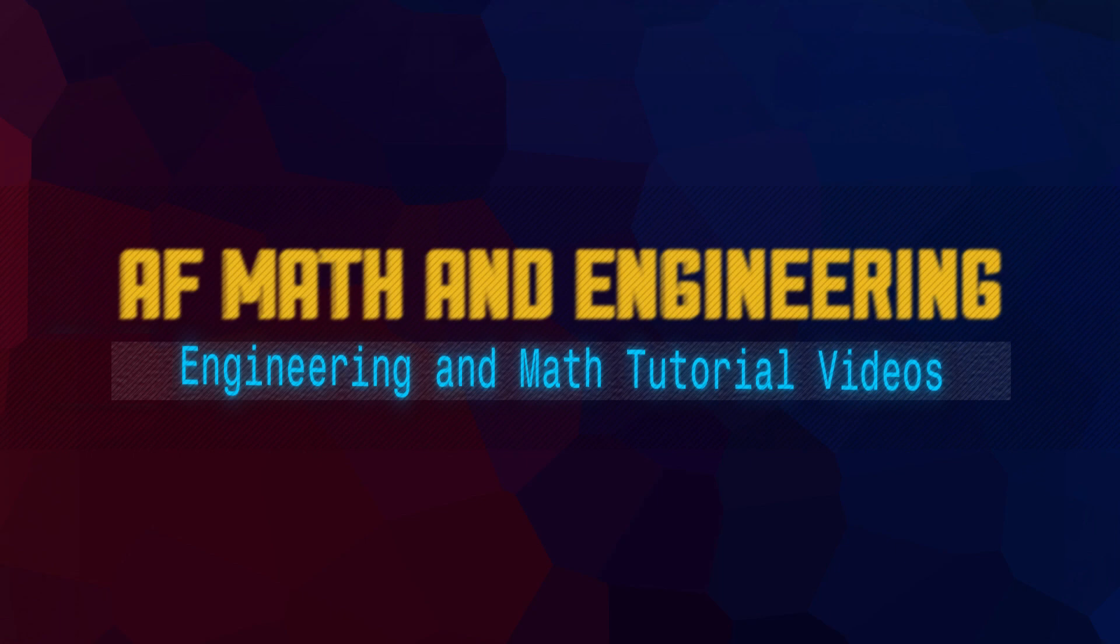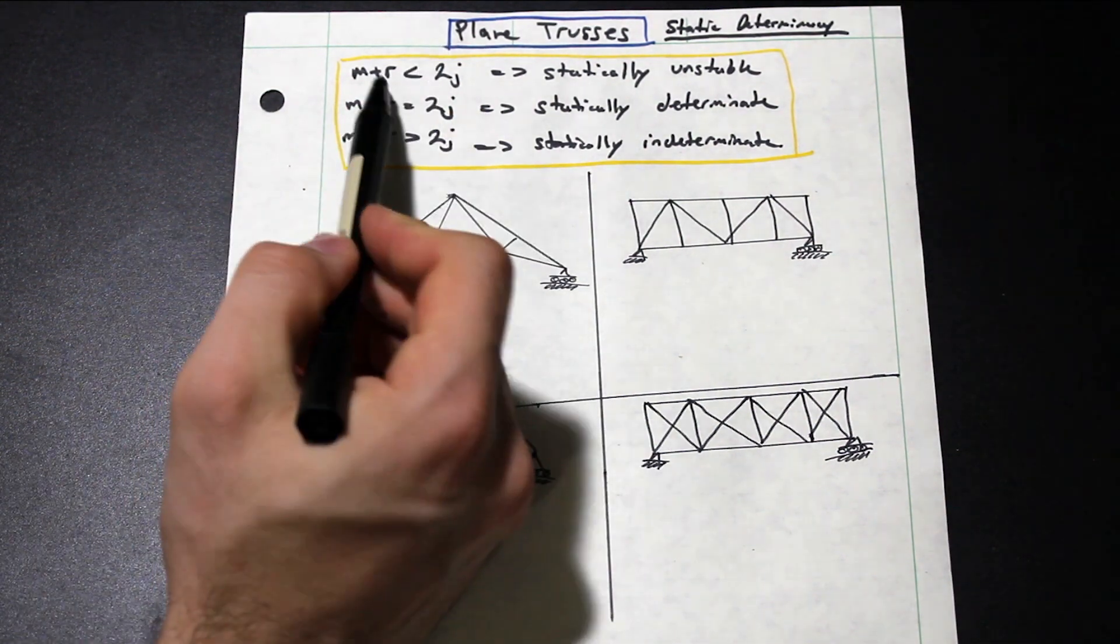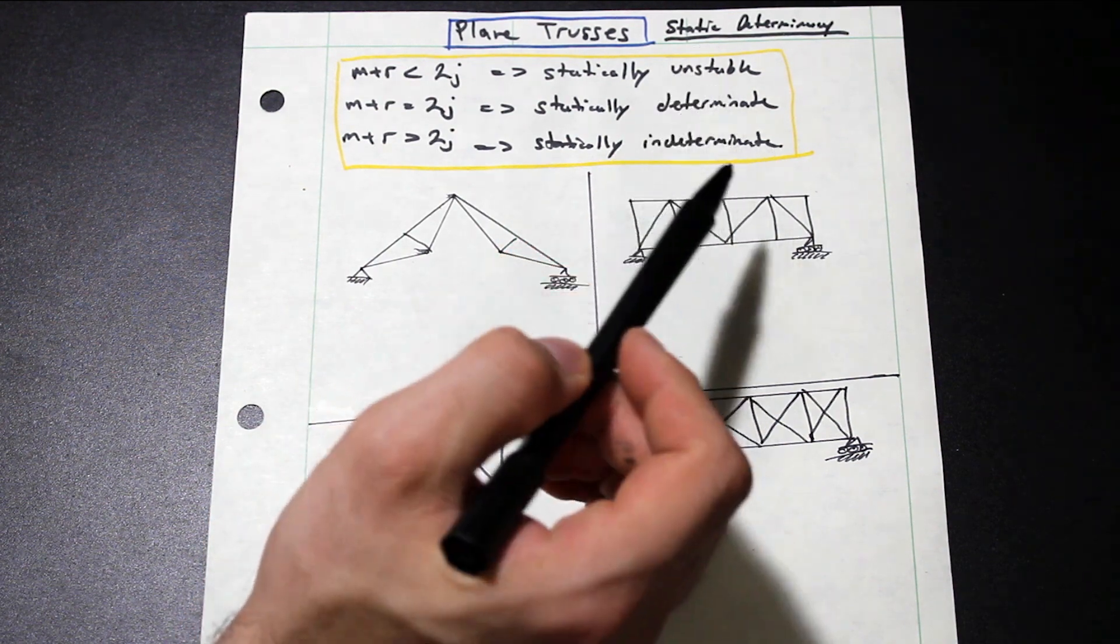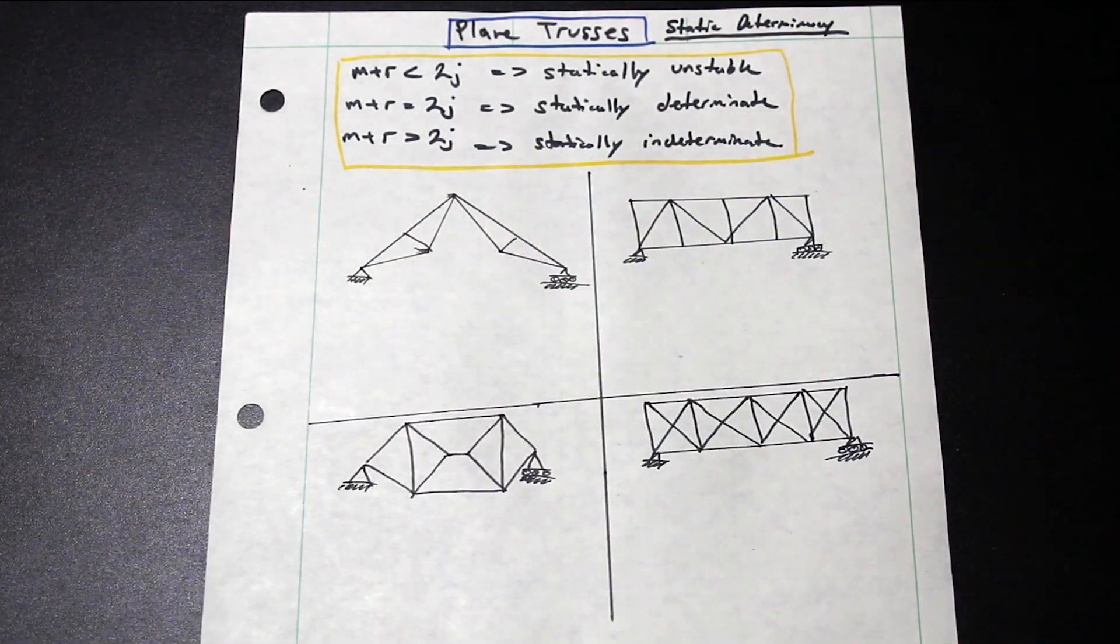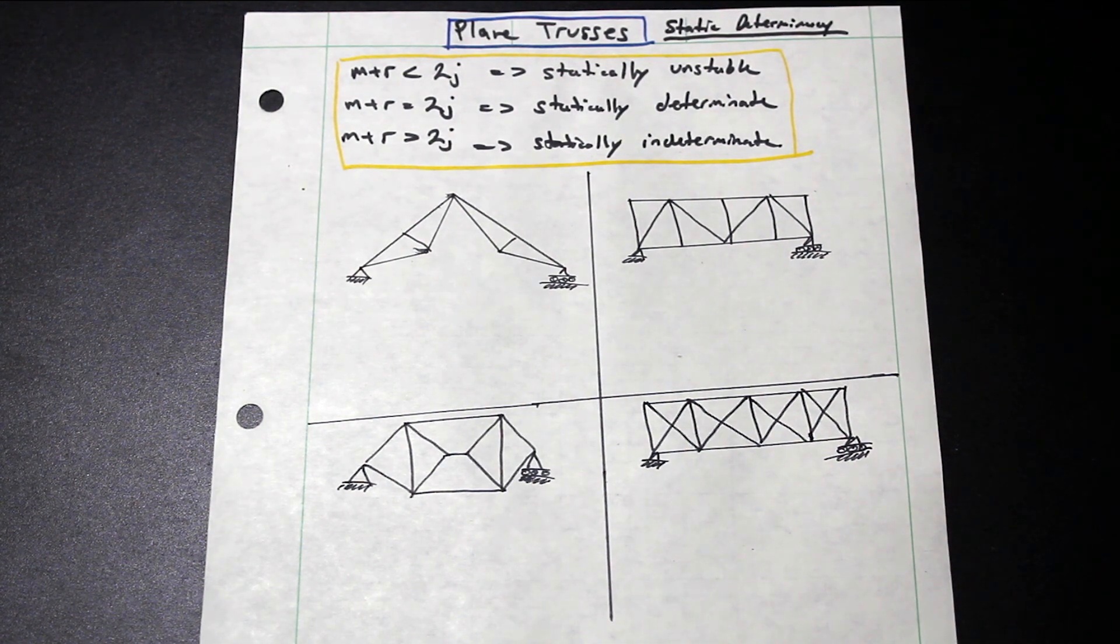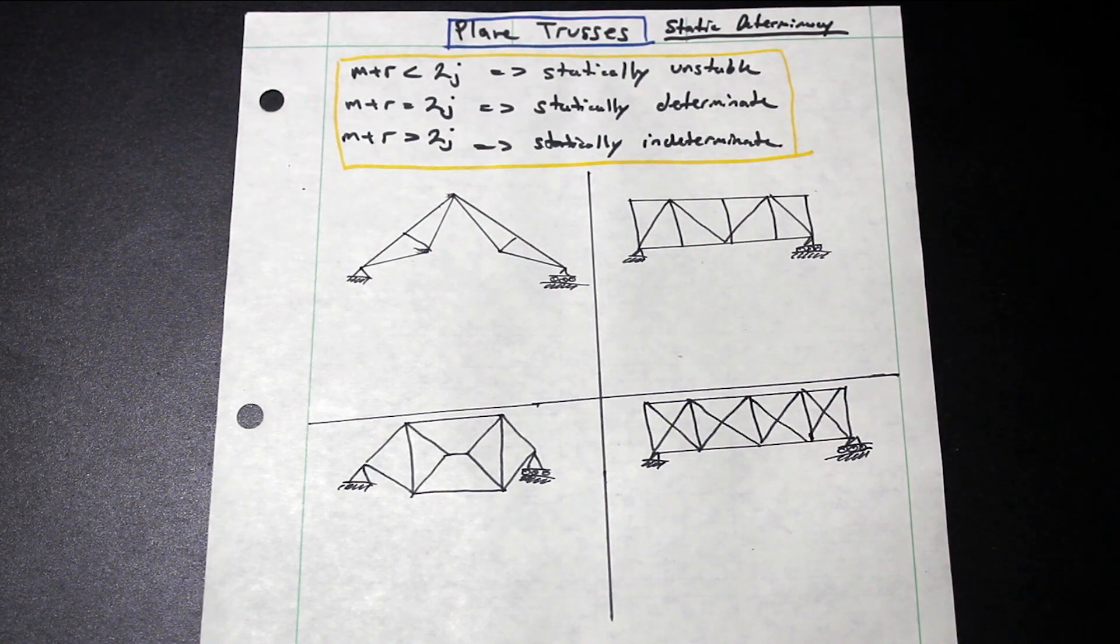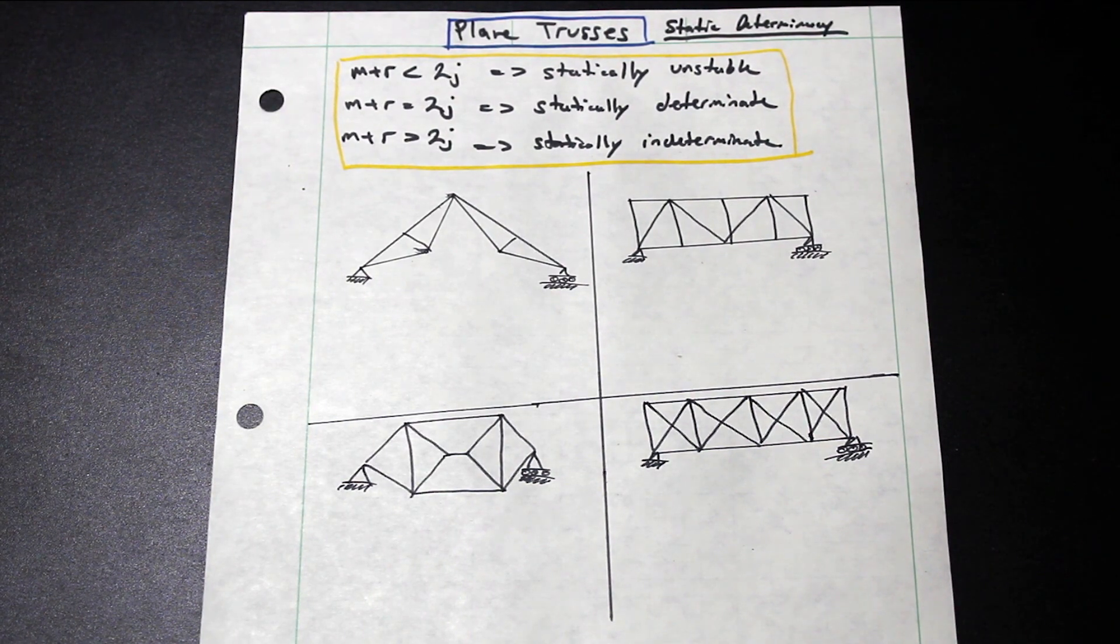Fred here from AF Math and Engineering. We're going to do a video for you on plane trusses today. It's going to be a pretty simple, quick video. I'm going to go over how we arrive at these equations for statically unstable, determinate, or indeterminate plane trusses. And then we're going to solve a few example problems. And just a little note, guys, if you're enjoying the channel, hit that subscribe button down below. It's much appreciated. Hit the like button and just leave a comment down below because we love to chat with you guys.